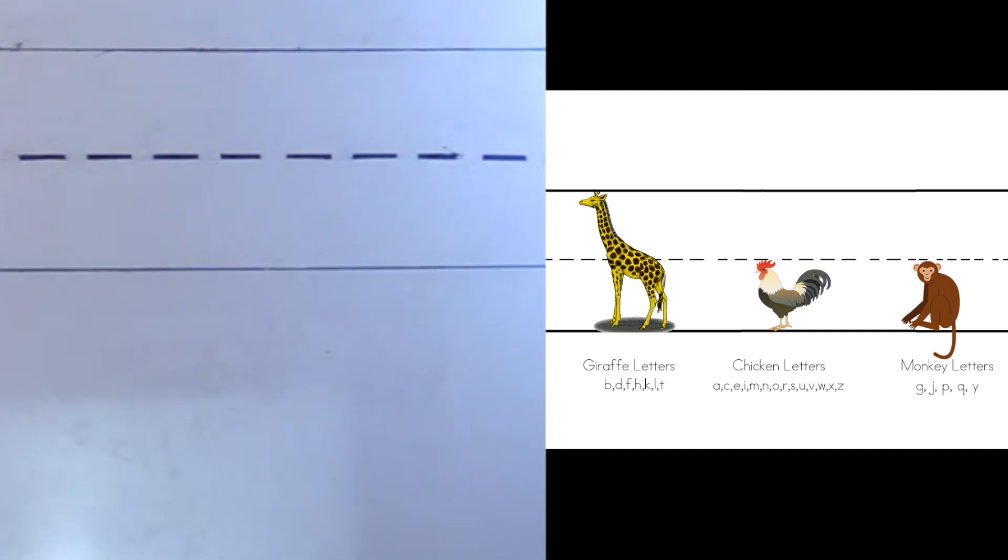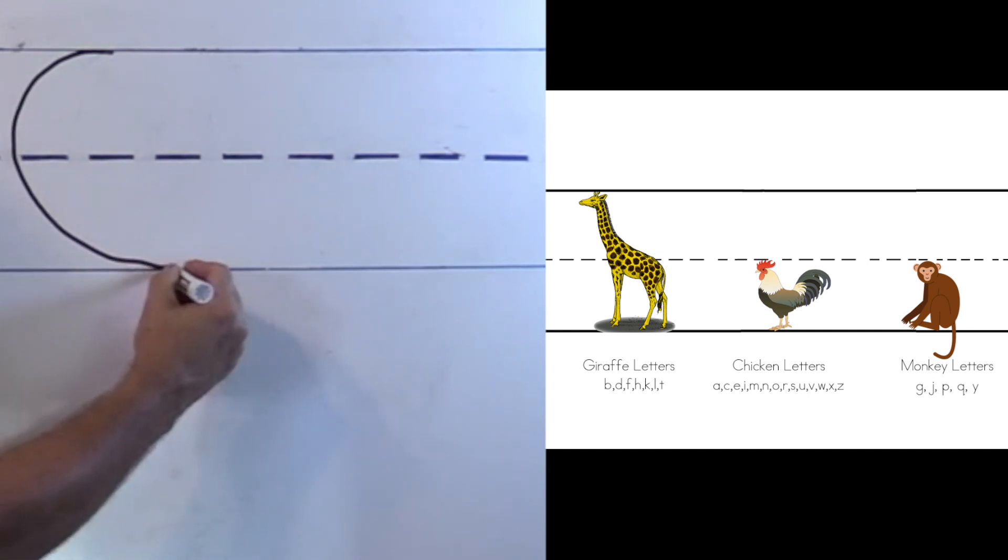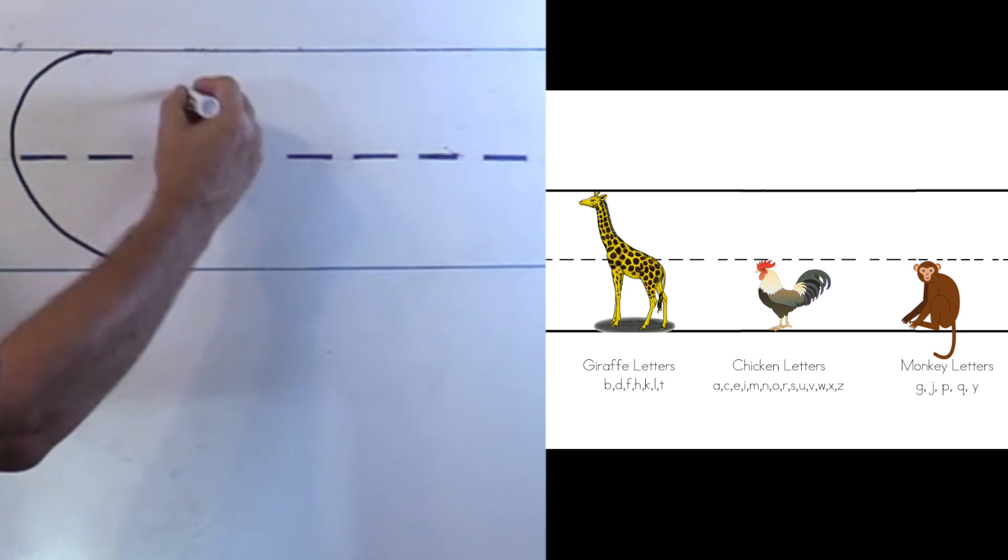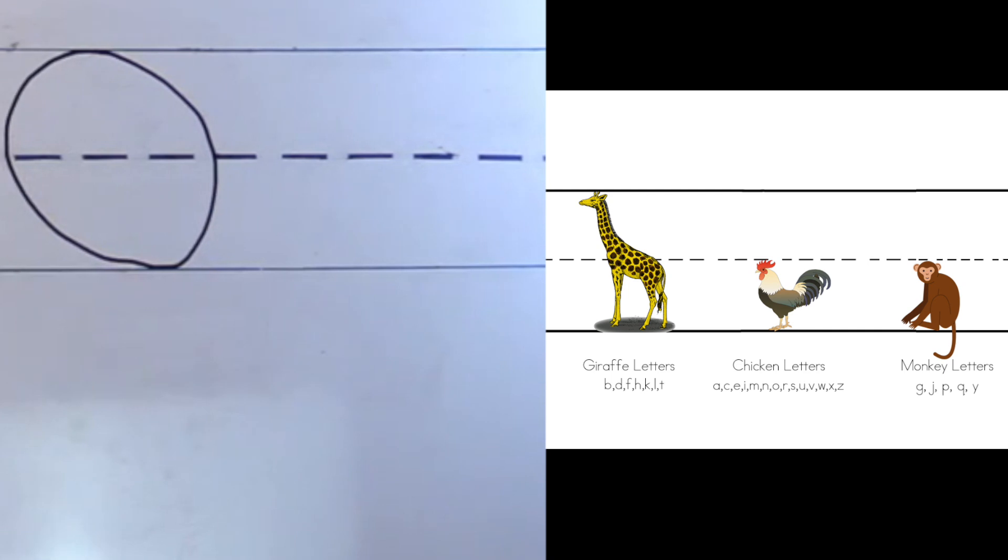Now we can do the letter Q all by ourselves. Remember, where do I start for the uppercase Q? The uppercase Q starts at the top. Do you have your pencil at the top? Okay, here we go. We go around just like we're making the letter O.